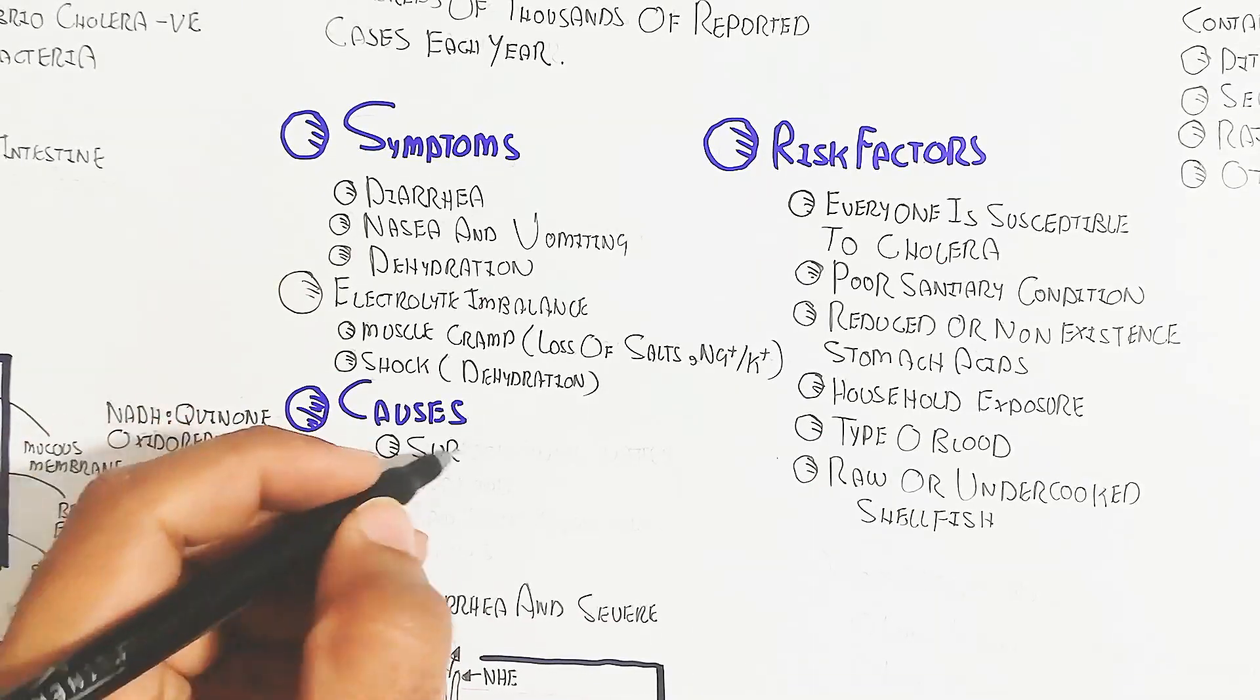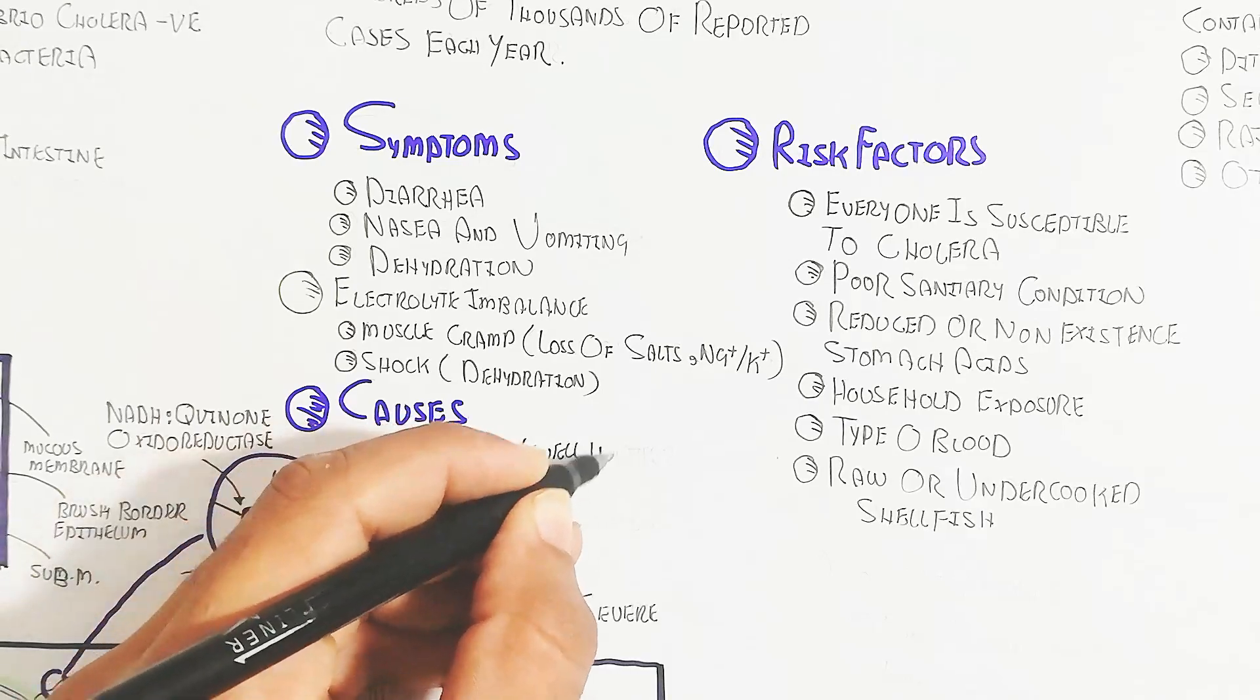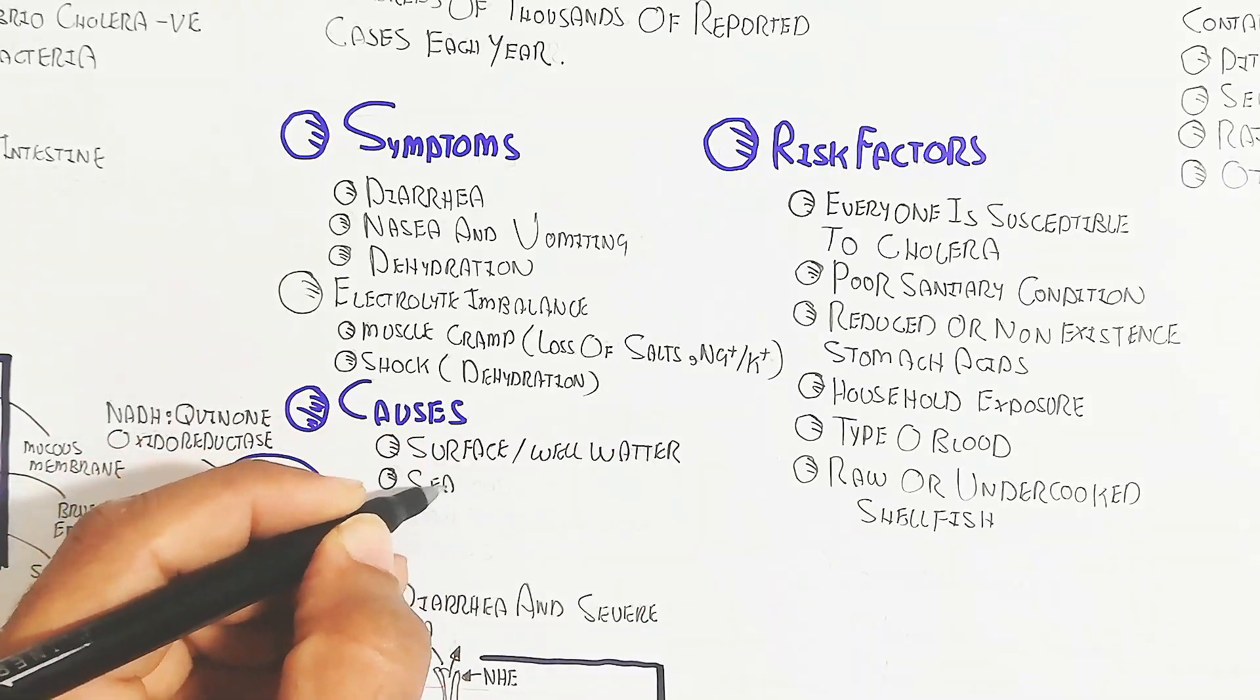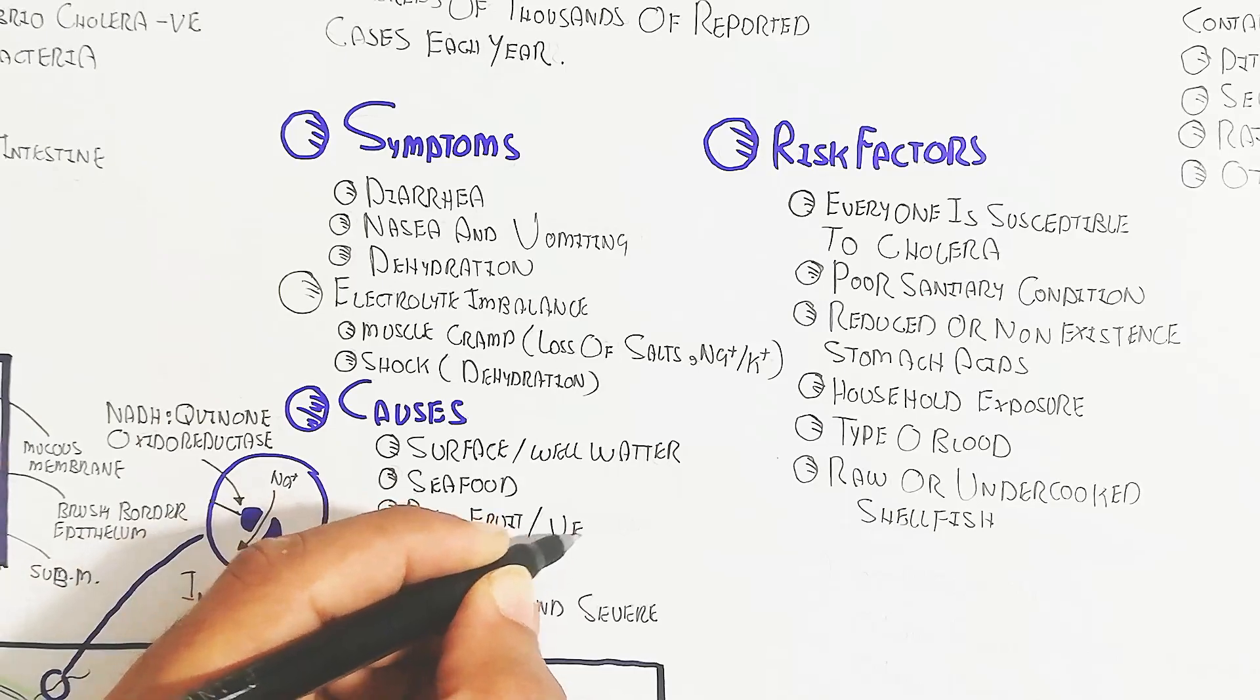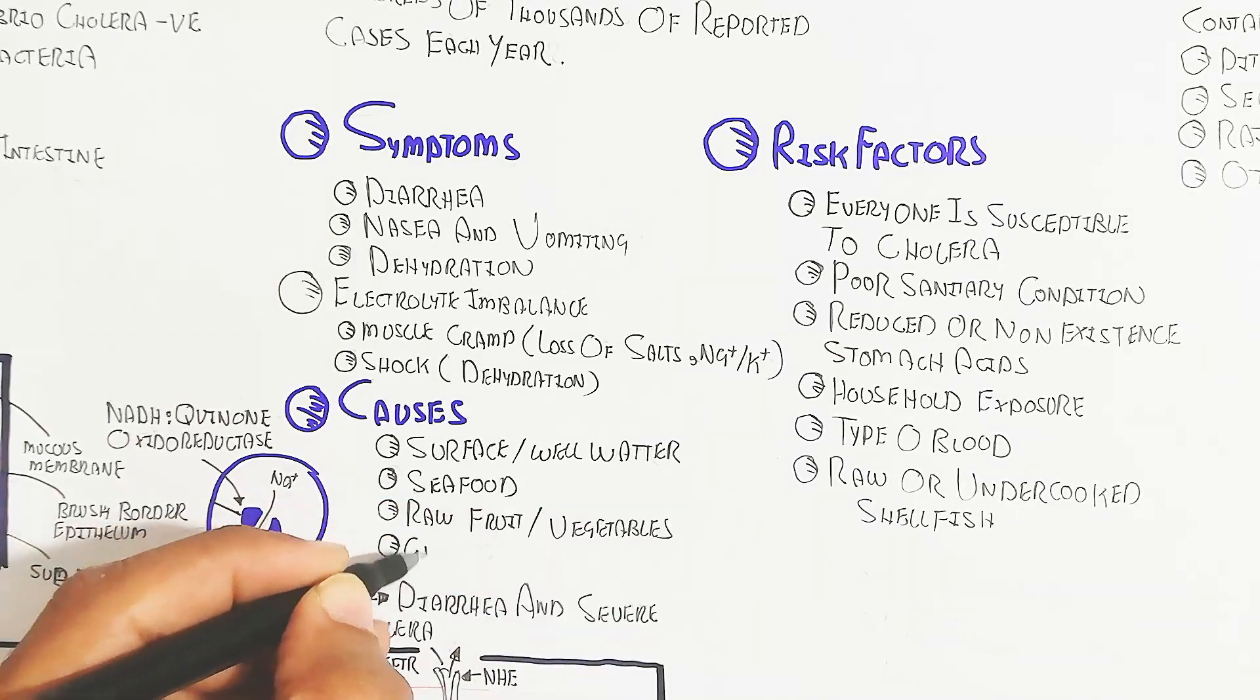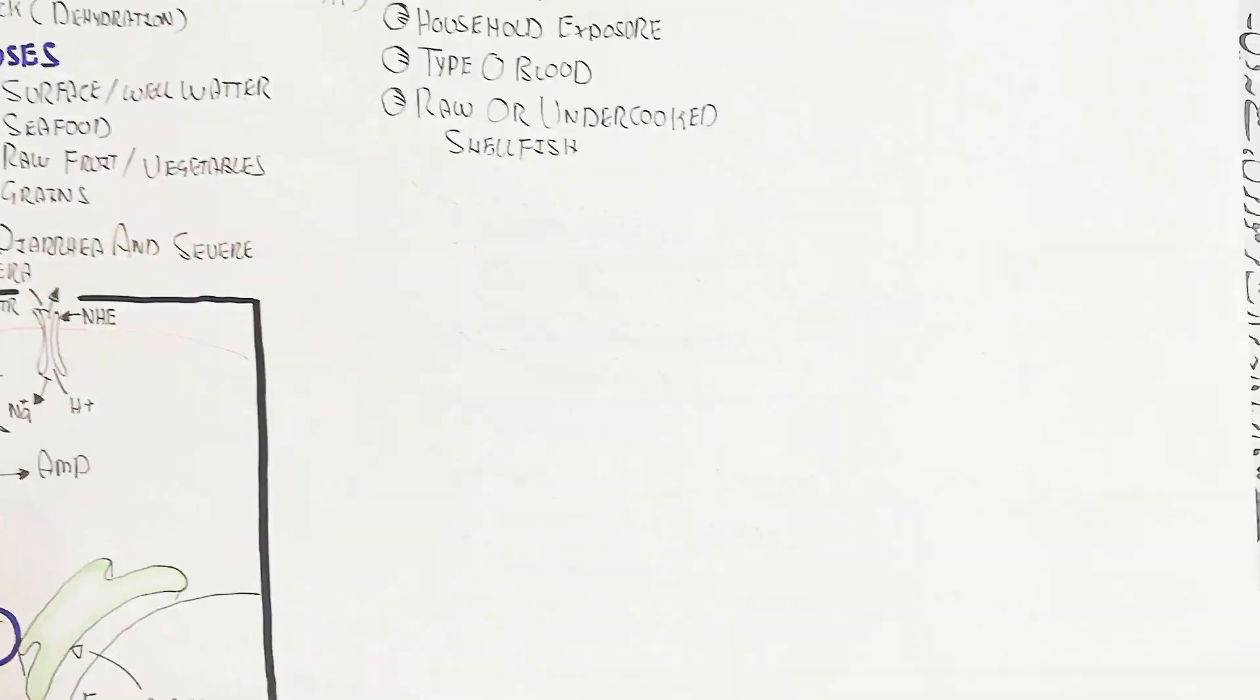Causes include surface well water and seafood that is not cooked completely, as well as raw fruit, vegetables, and greens.